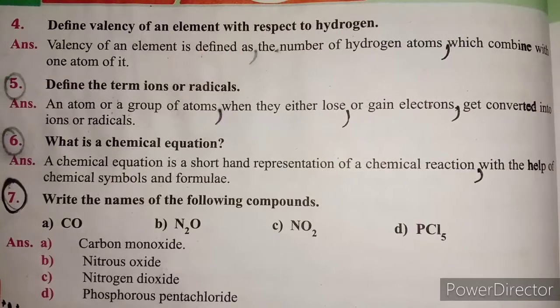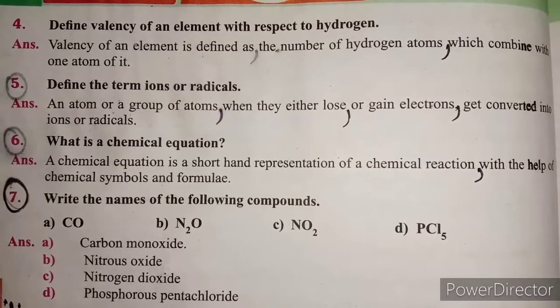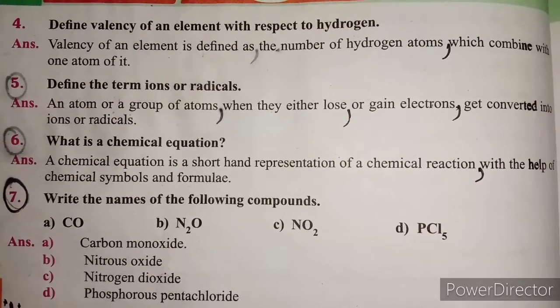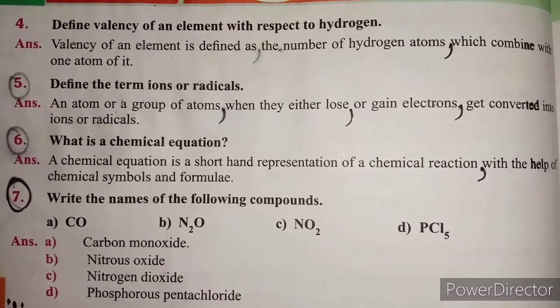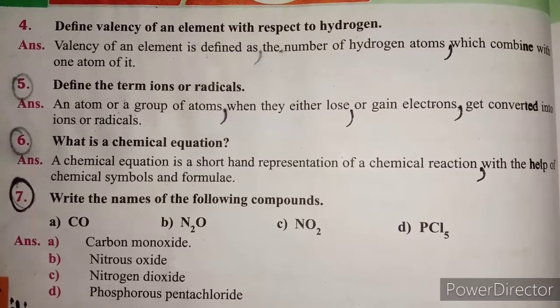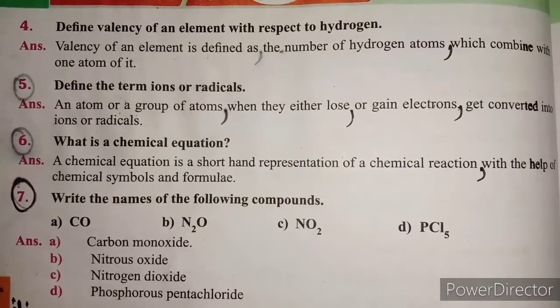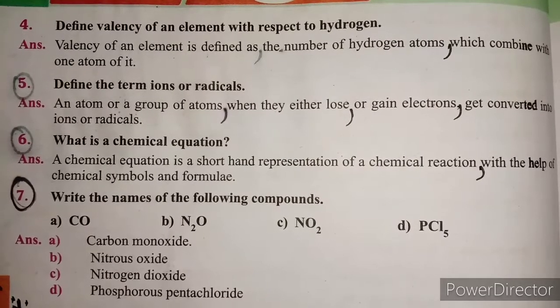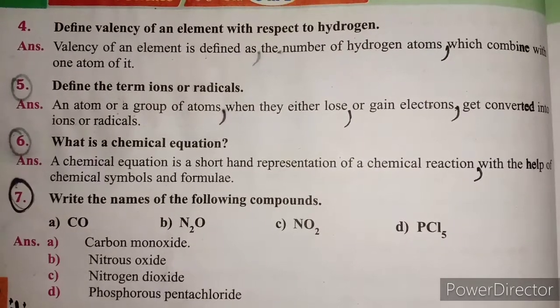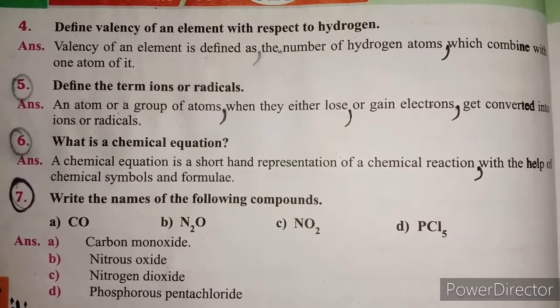Question 5: Define the term ions and radicals. An atom or a group of atoms when they either lose or gain electrons, get converted into ions or radicals.